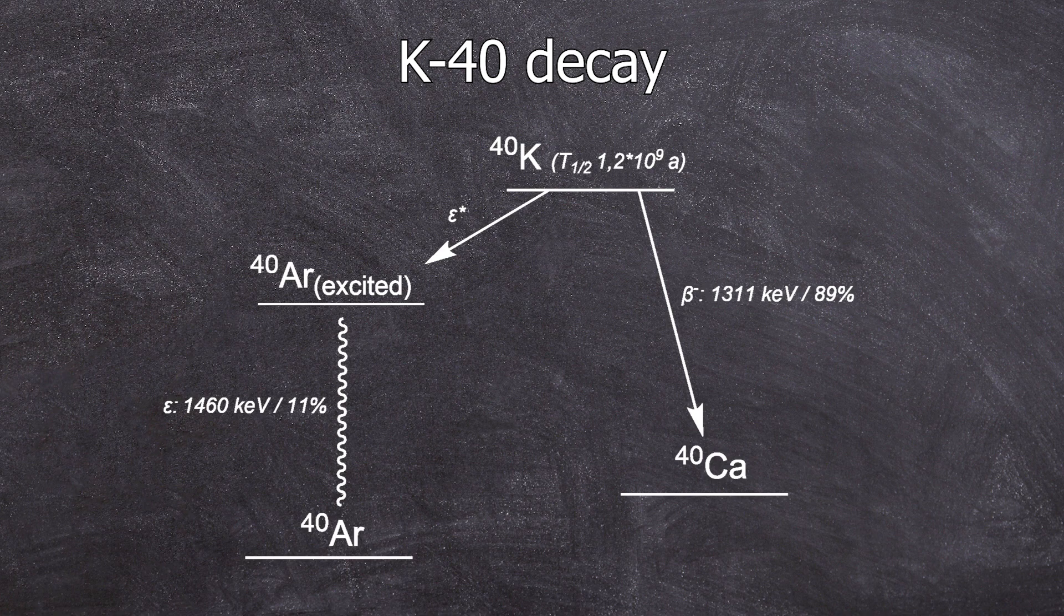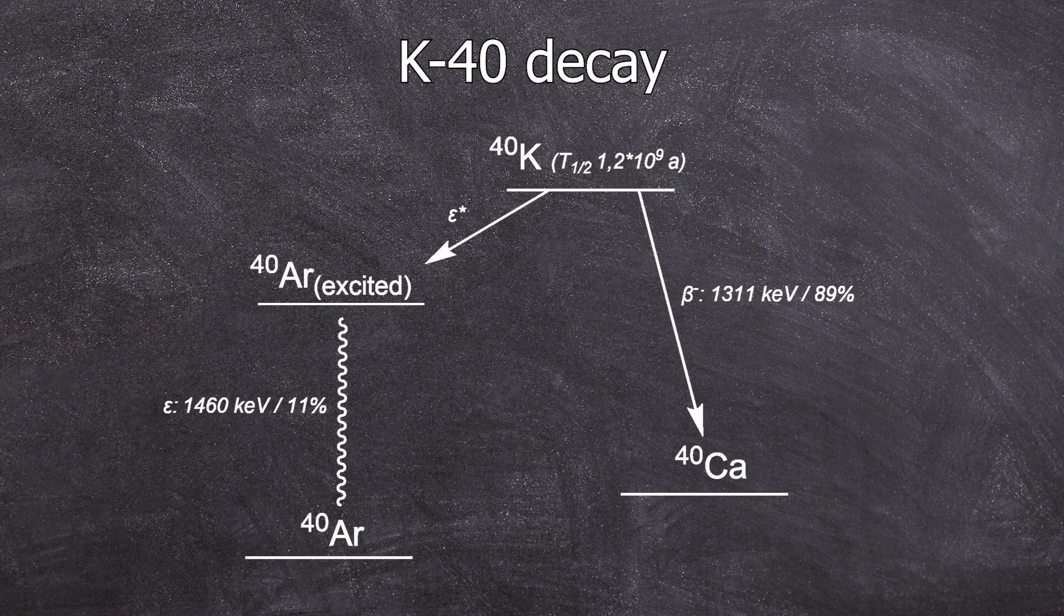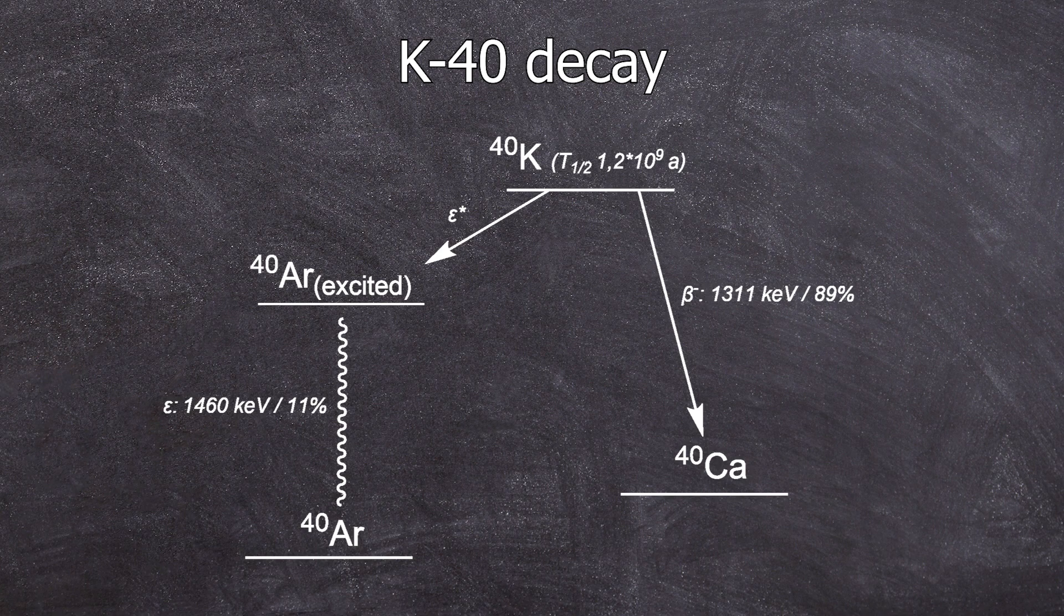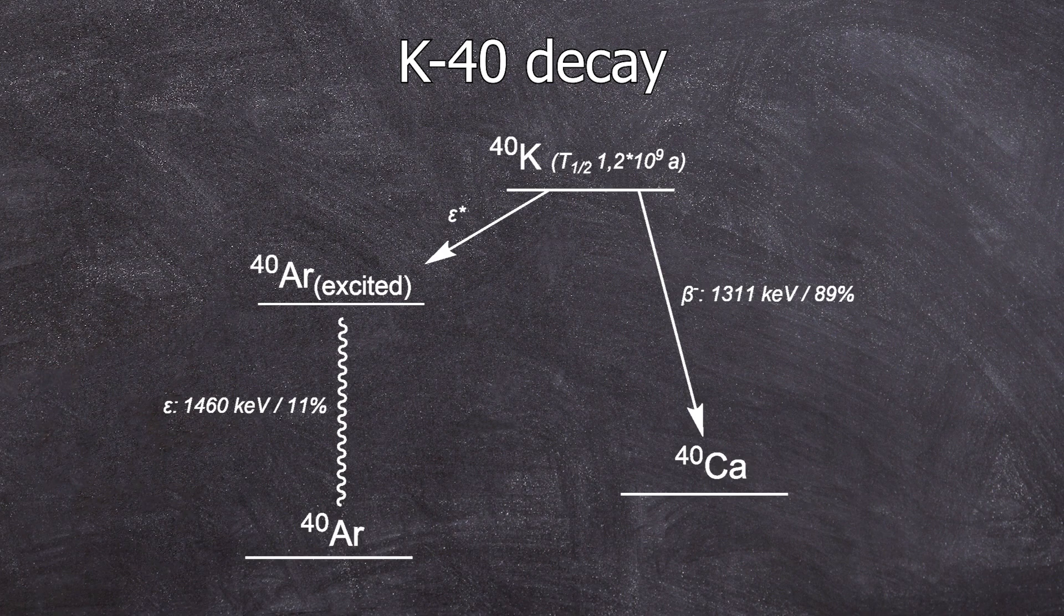Potassium-40 undergoes a beta minus decay into calcium-40 89% of the time. But it can also choose the electron capture beta plus route to argon-40 11% of the time. The 1600 kiloelectron volt actually comes from the electron capture route from the excited argon daughter nucleus, which falls back to the ground state, forming argon-40 in the ground state.